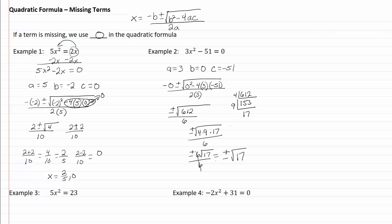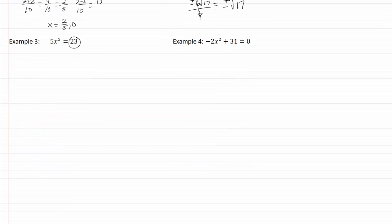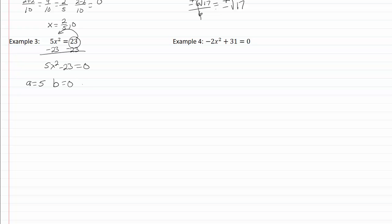In the next example, we do not have everything on one side, so we move terms over to get 5x squared minus 23 equals zero. That means our a equals 5. We do not have a b term, so b equals zero, and c equals negative 23. Plugging into the formula: negative b is zero, plus or minus the square root of b squared minus 4 times a times c, all over 2 times a.